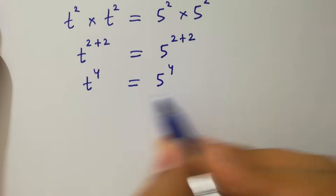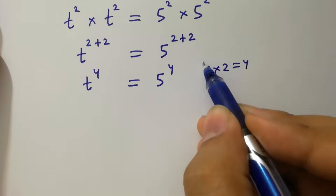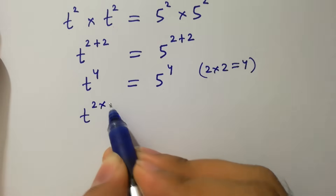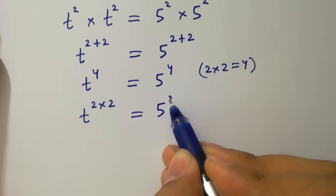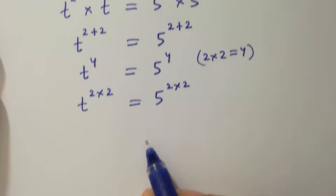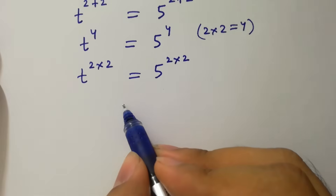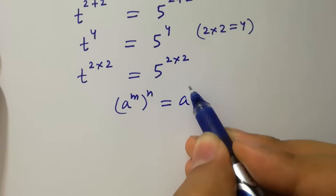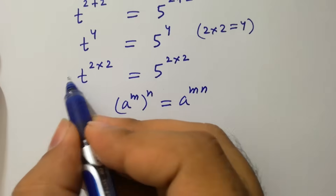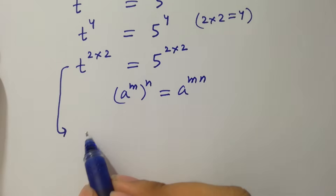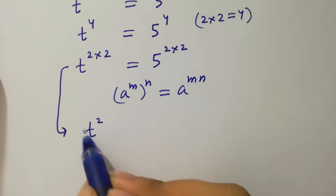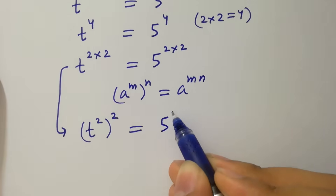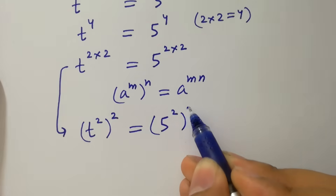Since 2 times 2 equals 4, it will be t to the power 2 times 2 equal to 5 to the power 2 times 2, using the rule a to the power m to the whole power n equals a to the power mn. Then it will be t to the power 2 to the whole power 2 equal to 5 to the power 2 to the whole power 2.